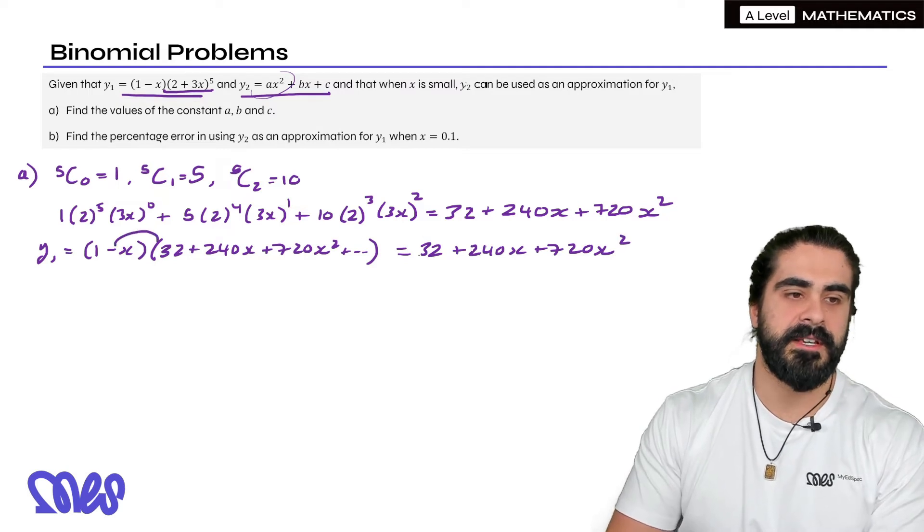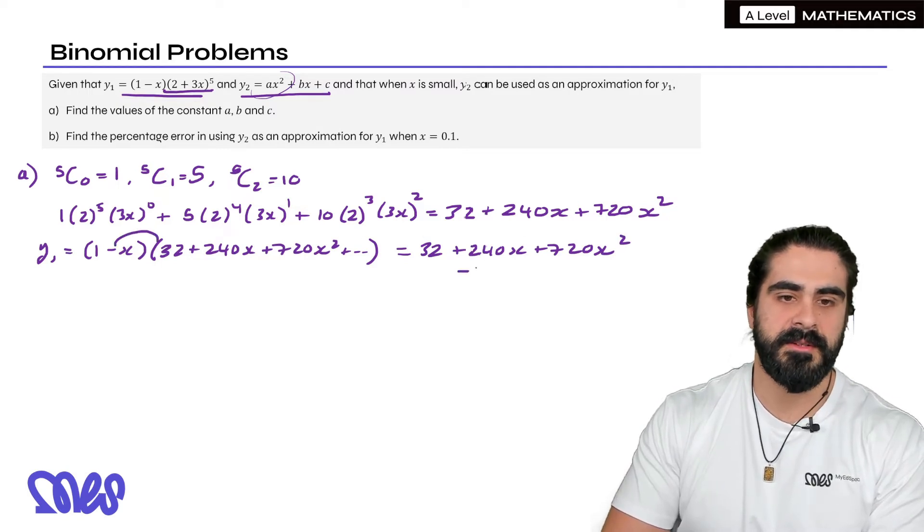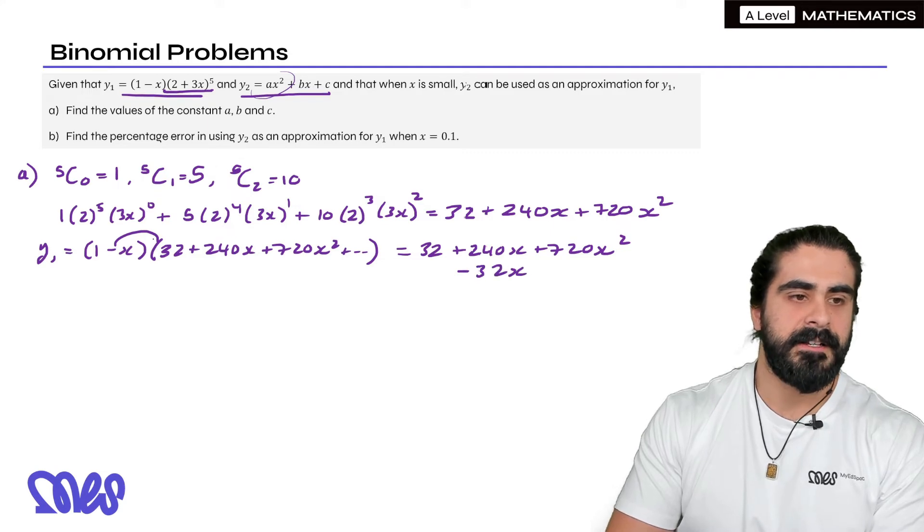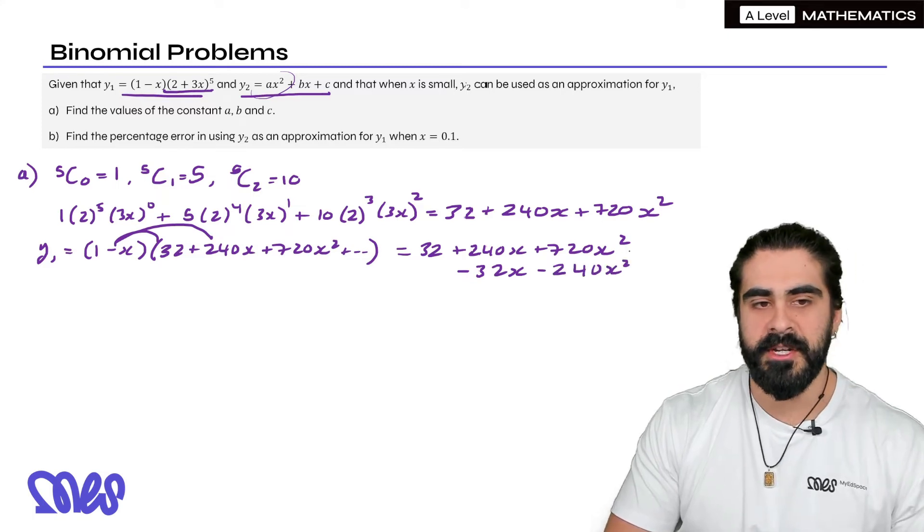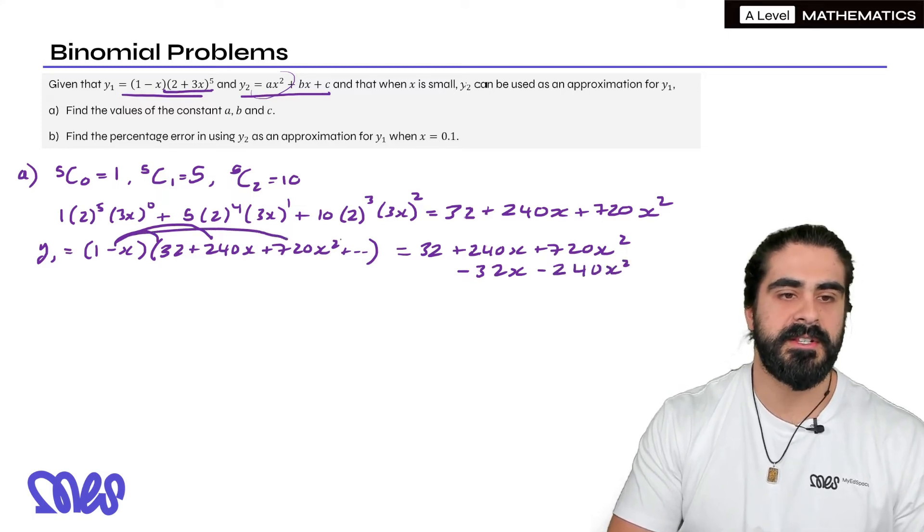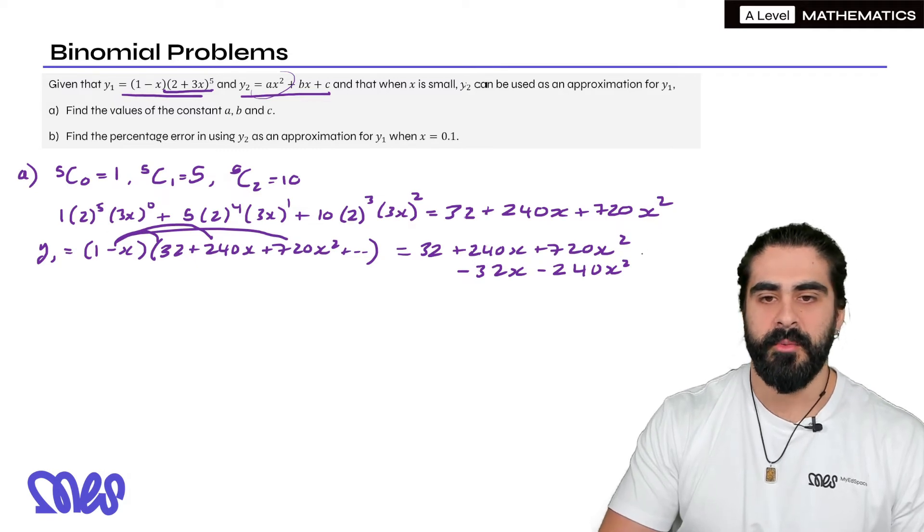So when we do -x times everything that will give us -32x. I'm going to write underneath. And then we're going to get -240x^2. And you don't need to do any more because if you did -x times this last term that's going to give you a cubic which we're not interested in.